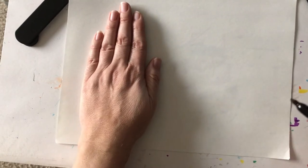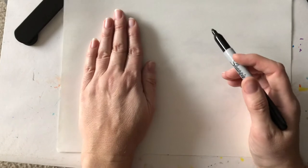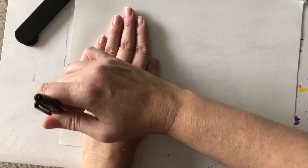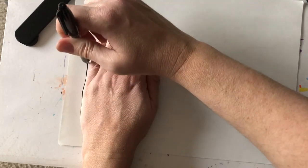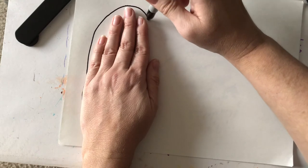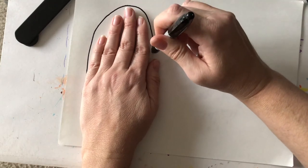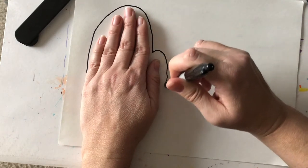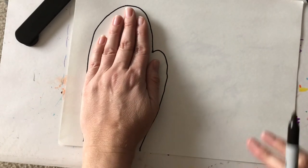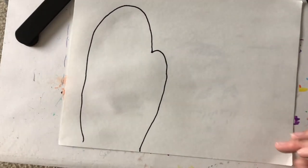Then you're going to take your pencil and you're going to start over here and we're going to trace around but when we get up to the top we're going to make a big curve. When we get by the thumb we're going to make a little curve and then we're going to go back down to the bottom of the paper. When I move my hand it looks like this.